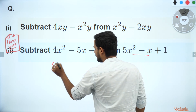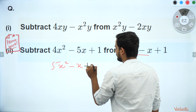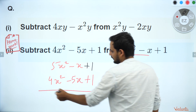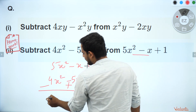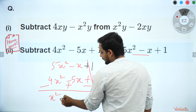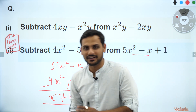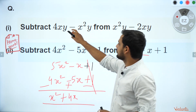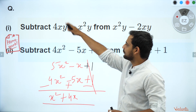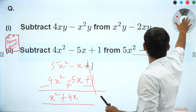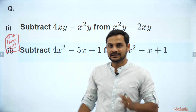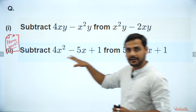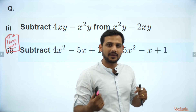The correct interpretation of 'subtract this from this' means from 5x²-5x+1 we subtract 4x²-5x+1. Since we are doing subtraction — minus plus minus — 4x² got cancelled, and minus x plus 5x gives plus 4x, so the answer is x²+4x. Whenever it says 'subtract A from B,' it means B minus A — same as subtract 8 from 10 means 10 minus 8.